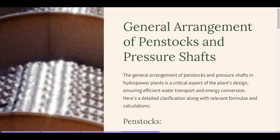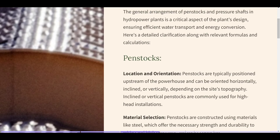The general arrangement of penstocks and pressure shafts in hydropower plants is a critical aspect of the plant's design, ensuring efficient water transport and energy conversion. Penstocks — location and orientation: penstocks are typically positioned upstream of the powerhouse and can be oriented horizontally, inclined, or vertically, depending on the site's topography. Inclined or vertical penstocks are commonly used for high-head installations.